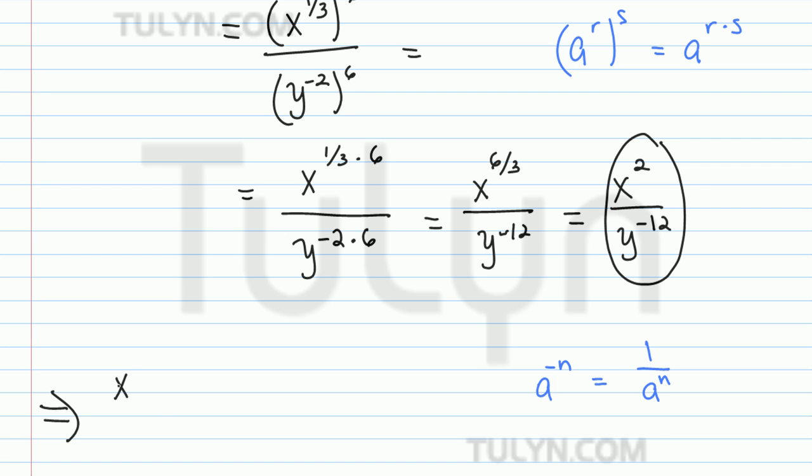So now, rewriting this over here, x squared over y to the negative 12 is the same thing as x squared over 1 over y to the 12, right?